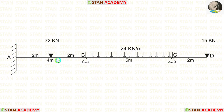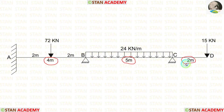Span AB is 4 meters long. Span BC is 5 meters long. The overhanging span CD is 2 meters long.